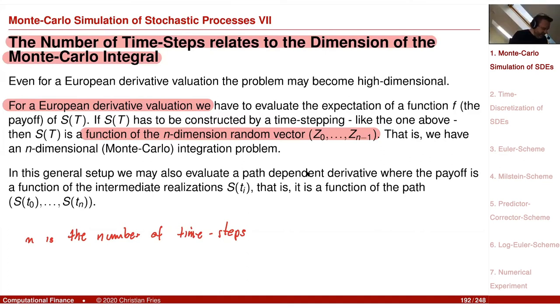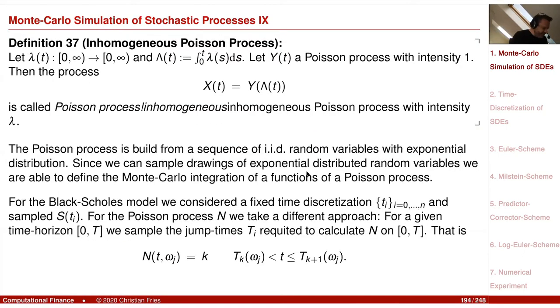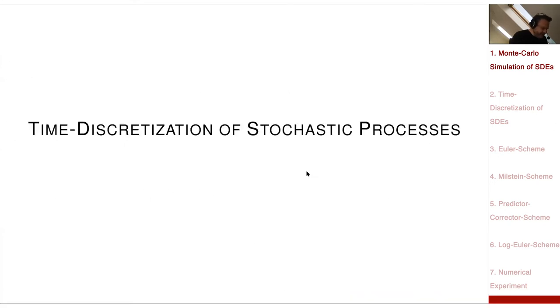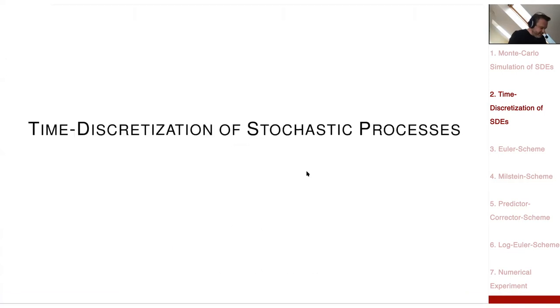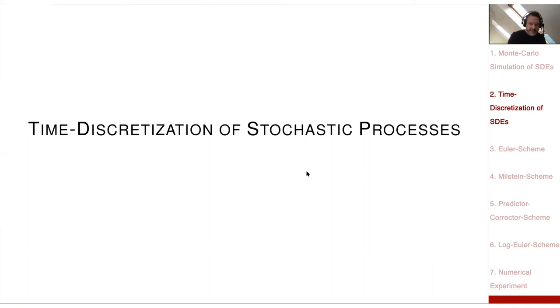In the script, you have more examples on Monte Carlo simulation of stochastic processes, including a Poisson process and a remark on low-discrepancy sequences, which I'll skip. So let's start a new chapter on time discretization of stochastic processes. What I'd like to do in this section is discuss different possibilities for discretizing stochastic differential equations: the Euler scheme, the Milstein scheme, and the predictor-corrector scheme. For the Euler scheme, I will prove the convergence rate — weak order convergence 1/N and strong order convergence 1/√N, where N is the number of time steps.